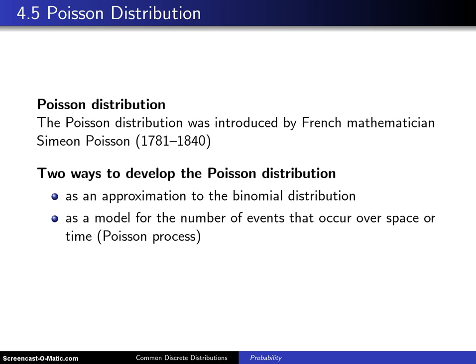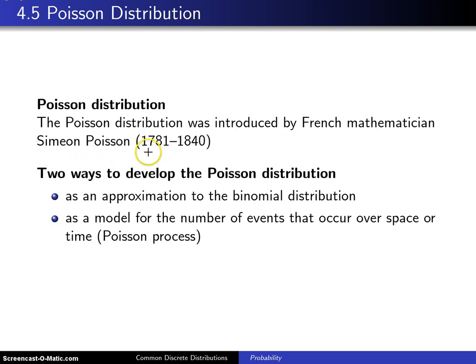This section introduces a new distribution which is known as the Poisson distribution, which was introduced by French mathematician Siméon Poisson, who lived from 1781 to 1840.